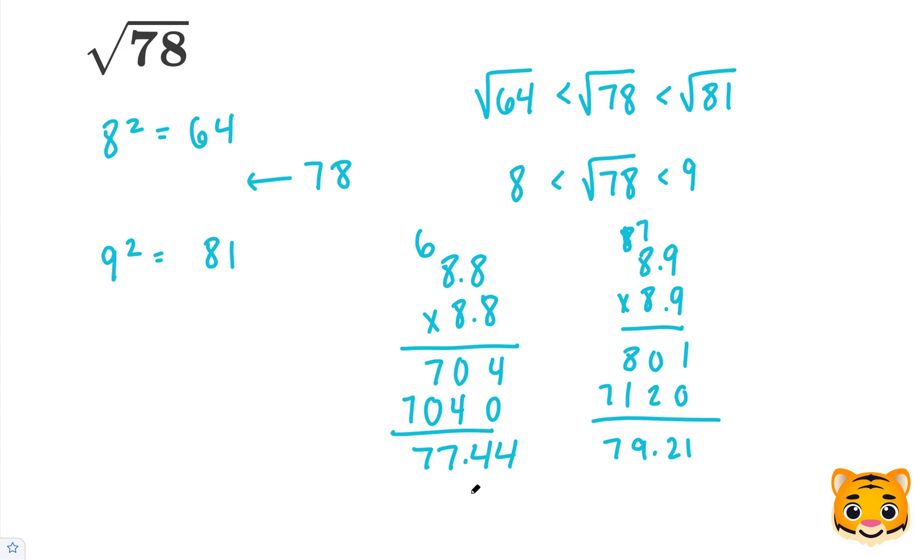So we can see that 77.44 is closer to 78 than 79.21 is. So the 8.8 is a better approximation. So we can approximate the square root of 78 to be about 8.8.